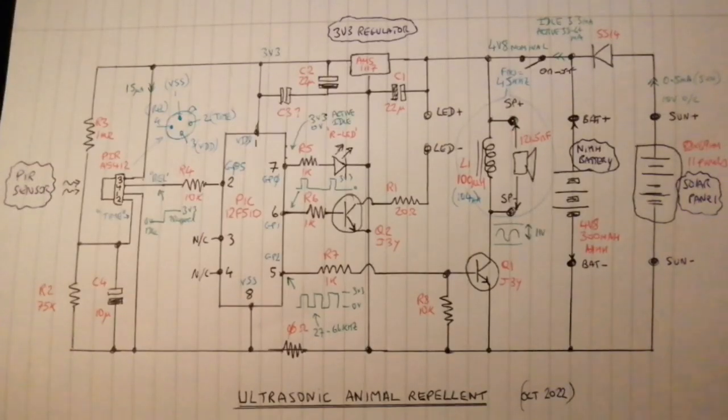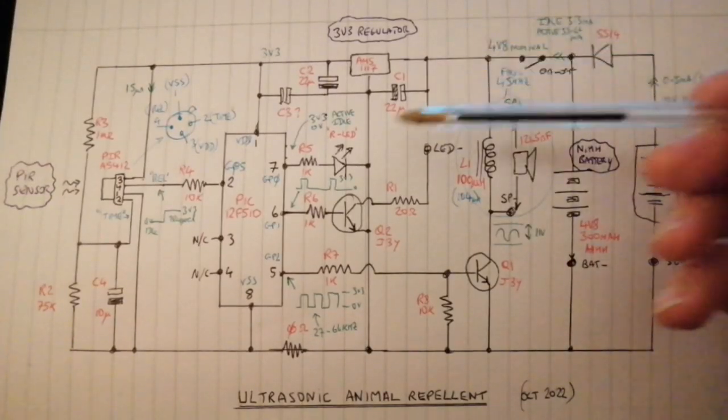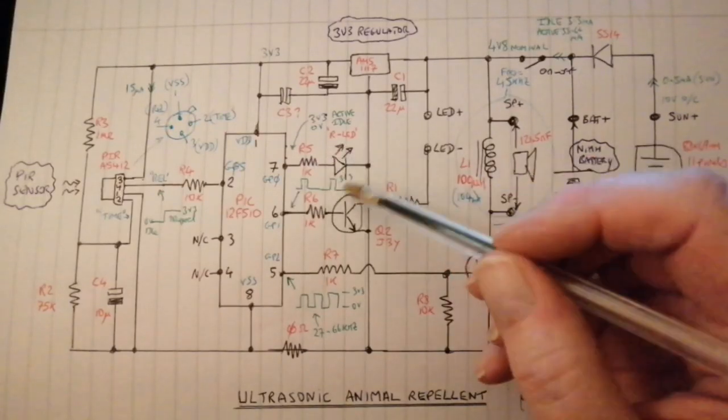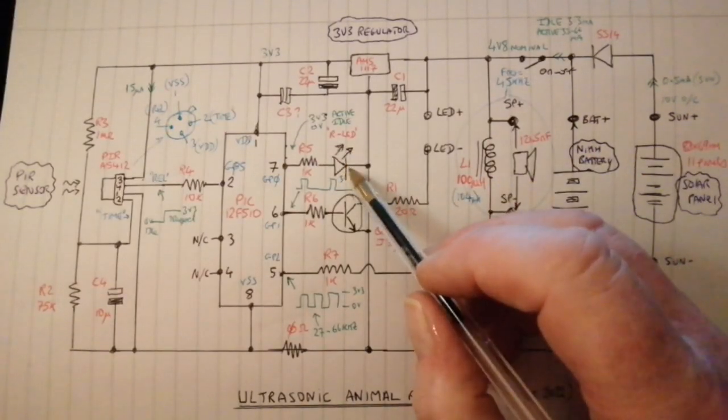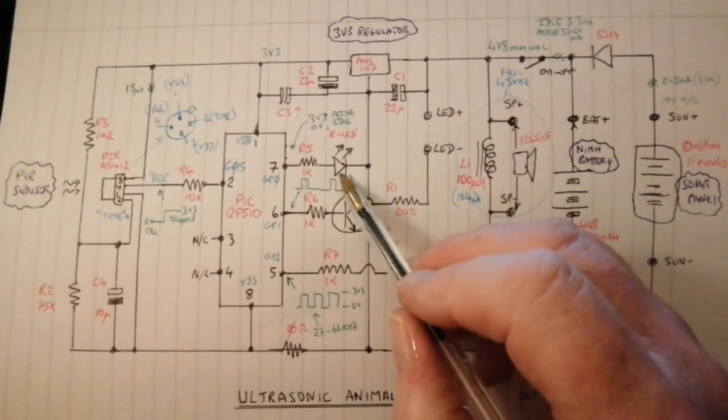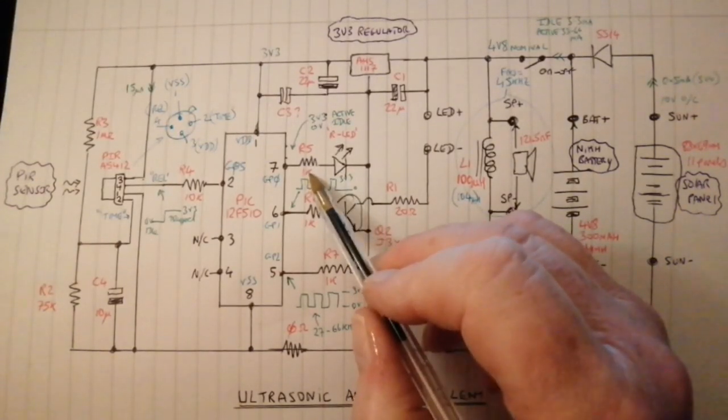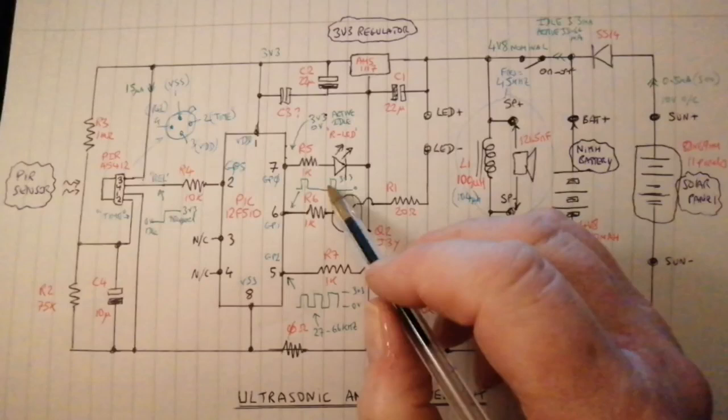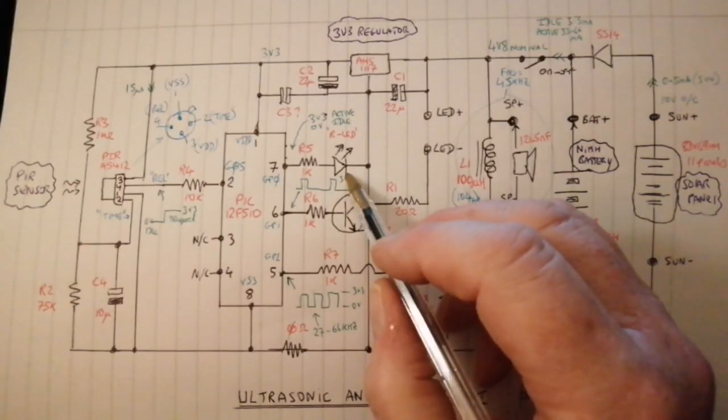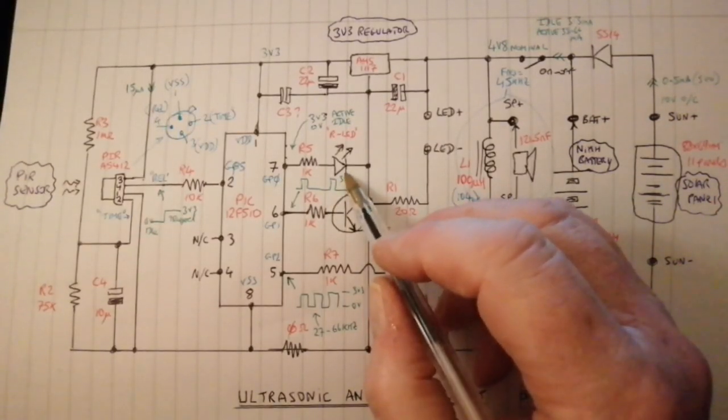Turning to the output side, the GP0 output of the PIC feeds the anode of the onboard LED via R5 which is a 1K. This is the LED which pokes through the front of the device and lights up when it's triggered.